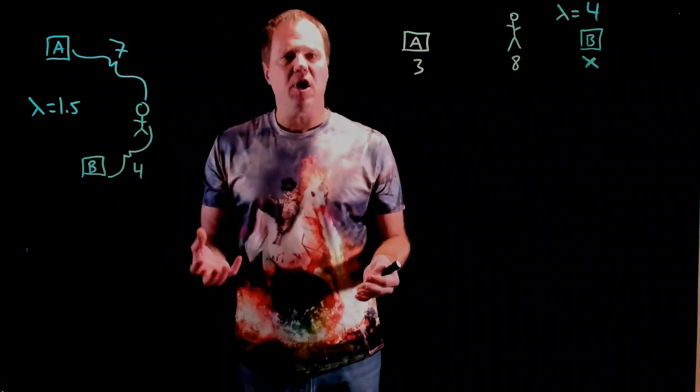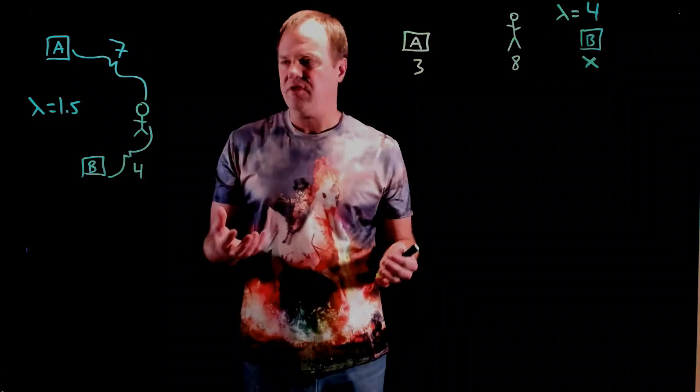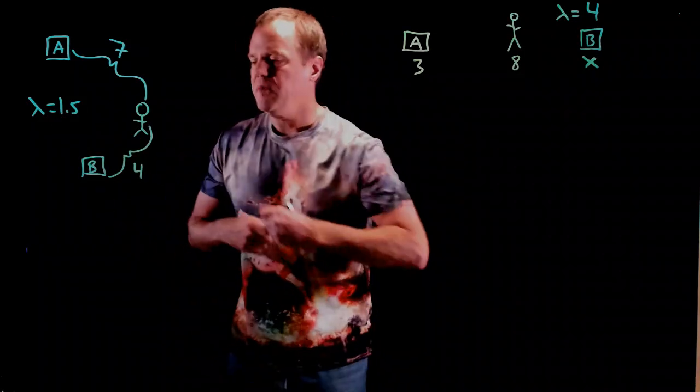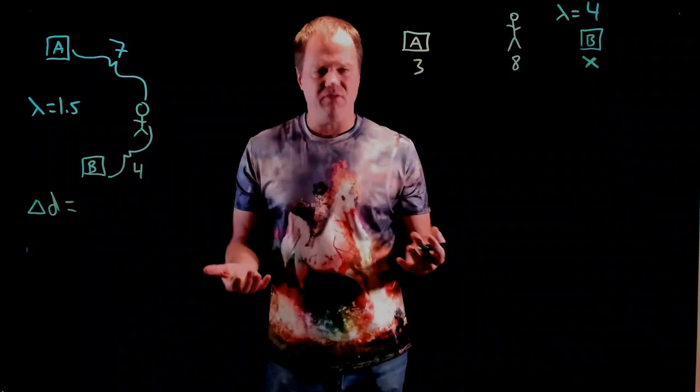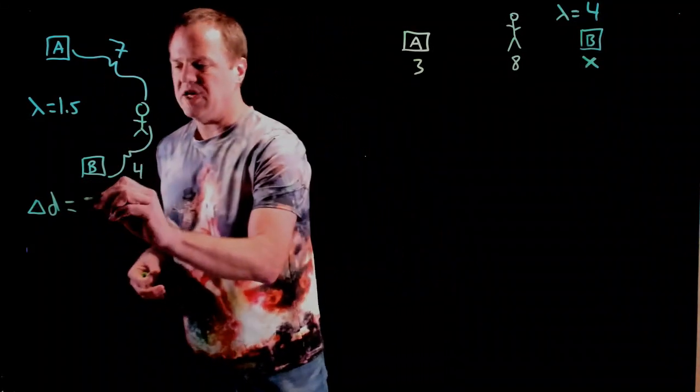As with most interference problems, the first step is to determine the path difference, which is pretty easy for this one. The path difference is just how far you are from one source minus how far you are from the other. So, 7 minus 4.